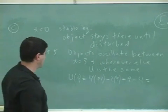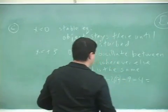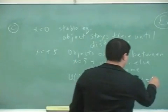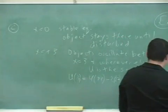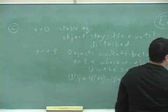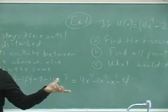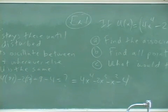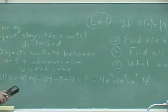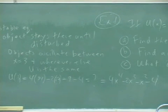So whatever that number is equal to, now set it equal to the potential energy function and solve for when else is the potential energy the same, right? So let's put this again in solver here. Today we're going to use solver quite a bit.